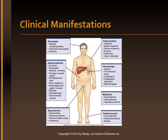This is another representation of clinical manifestations by system. As you can see, all systems are affected including the neurologic, GI, reproductive, cardiovascular, metabolic, hematologic, as well as the integumentary system.